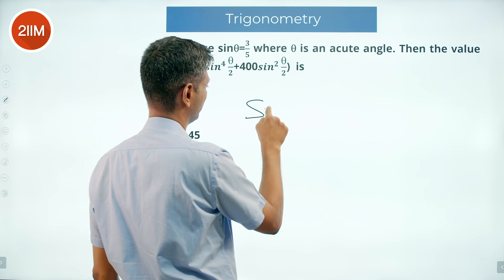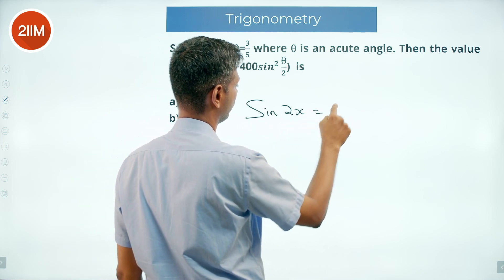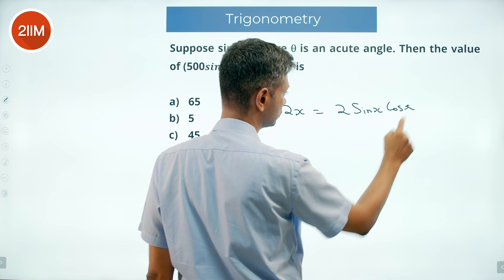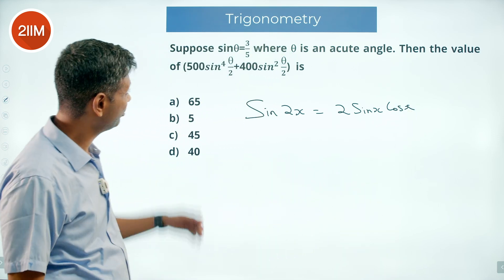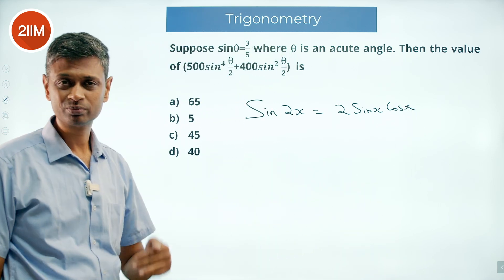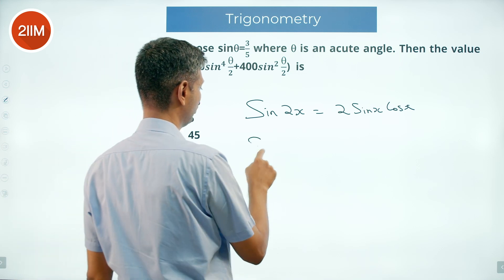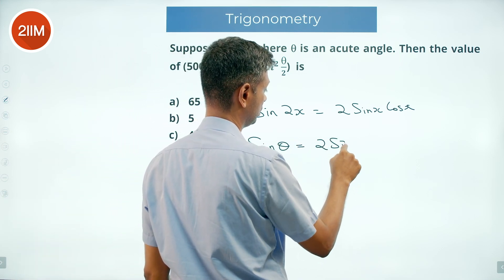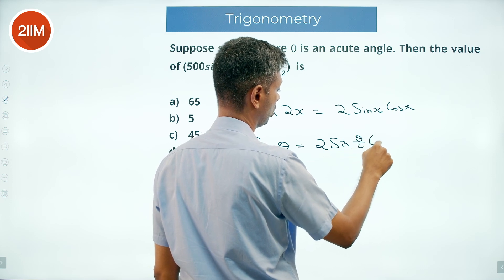You know this beautiful rule: sine 2x is 2 sine x cos x. I plug that in for theta, I would be able to go to theta by 2, and so I can say sine theta equals 2 sine theta by 2 cos theta by 2.